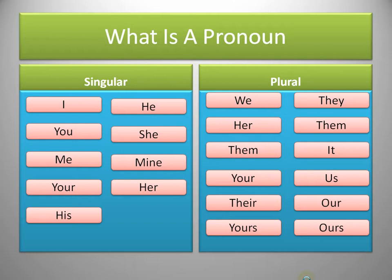The pronouns which are used to refer to plural things or people are: we, they, them, it, yours, us, their, our, yours. So these are examples of singular and plural pronouns.